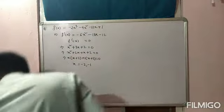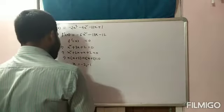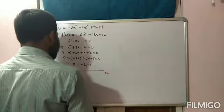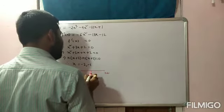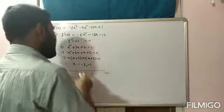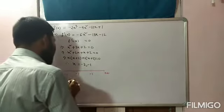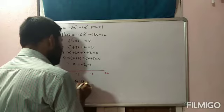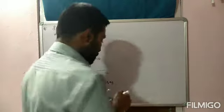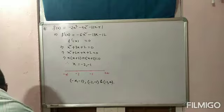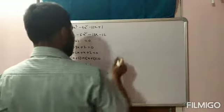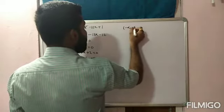Draw a number line from -∞ to +∞ and place x = -2 and x = -1. These two values divide the number line into three sub-intervals: (-∞, -2), (-2, -1), and (-1, +∞). In each sub-interval, check the nature of f'(x), written as (x + 2)(x + 1). For the first sub-interval (-∞, -2), take x = -5.